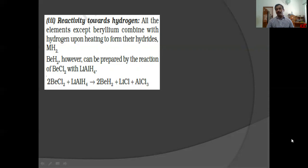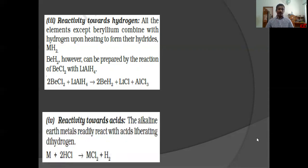Beryllium hydride cannot be prepared by direct reaction between beryllium and hydrogen. So it is prepared by the action of lithium aluminium hydride on beryllium chloride: 2BeCl2 + LiAlH4 gives 2BeH2 + LiCl + AlCl3. Reactivity towards acids: the alkaline earth metals readily react with acids liberating dihydrogen: M + 2HCl gives MCl2 + H2.